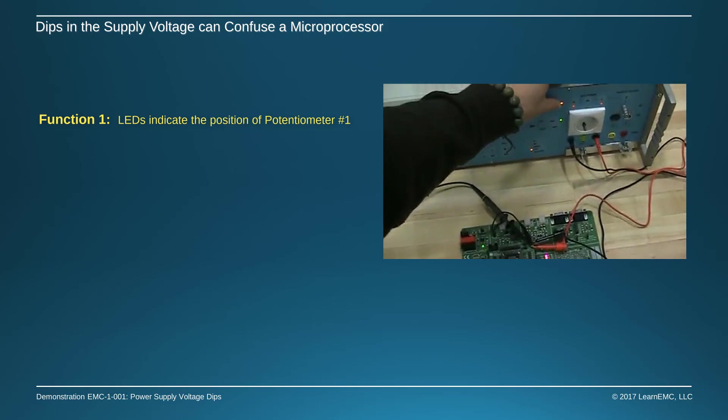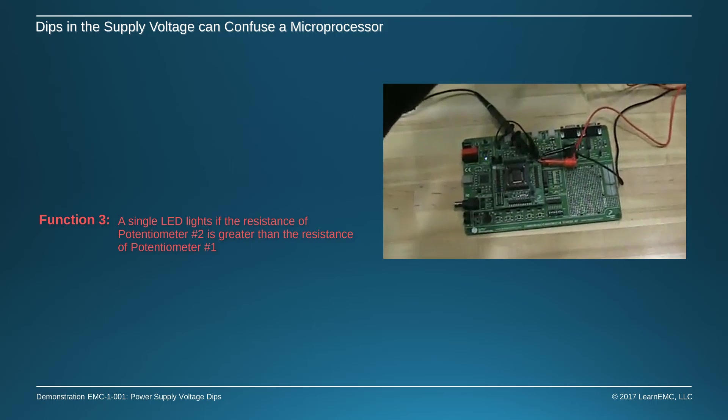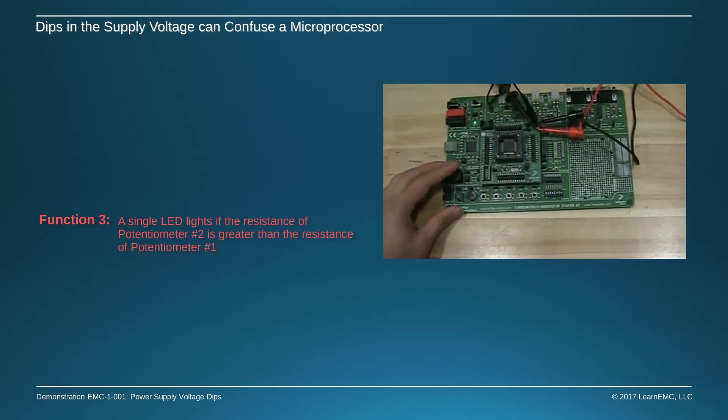We'll repeat the 38 millisecond power dip, and now we see that the processor has spontaneously switched to function 3.